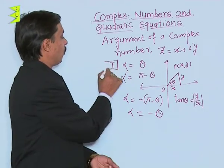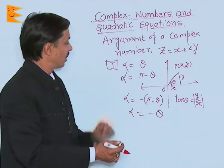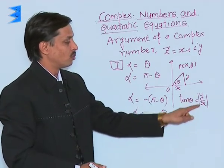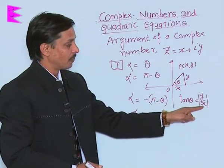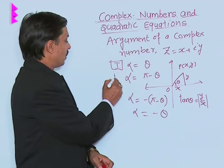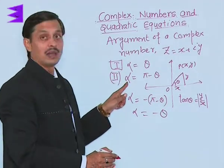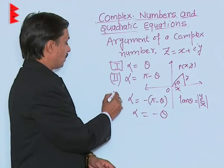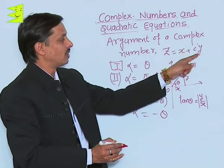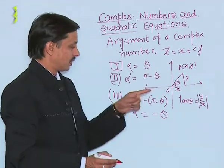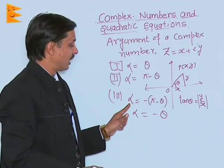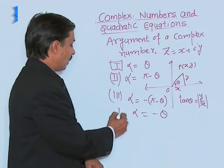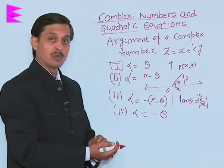The value of the argument varies from quadrant to quadrant. In the first quadrant, argument alpha equals theta, where theta is obtained using tan theta equals mod of y upon x. In the second quadrant, argument alpha equals pi minus theta. In the third quadrant, argument alpha equals minus of pi minus theta — that is, the angle made by the hypotenuse with the positive x-axis. In the fourth quadrant, alpha equals minus theta.